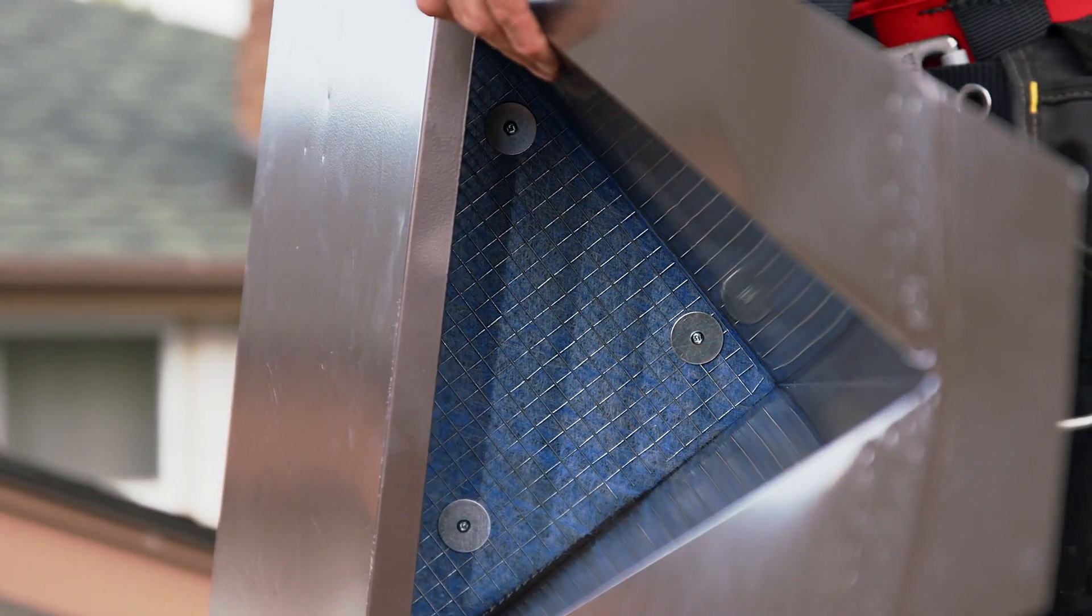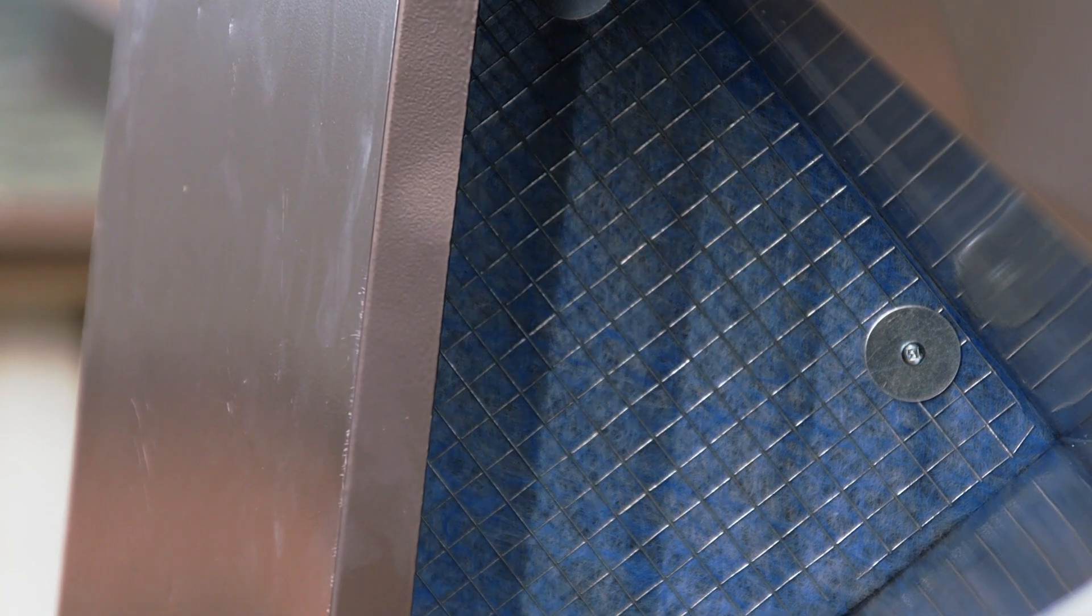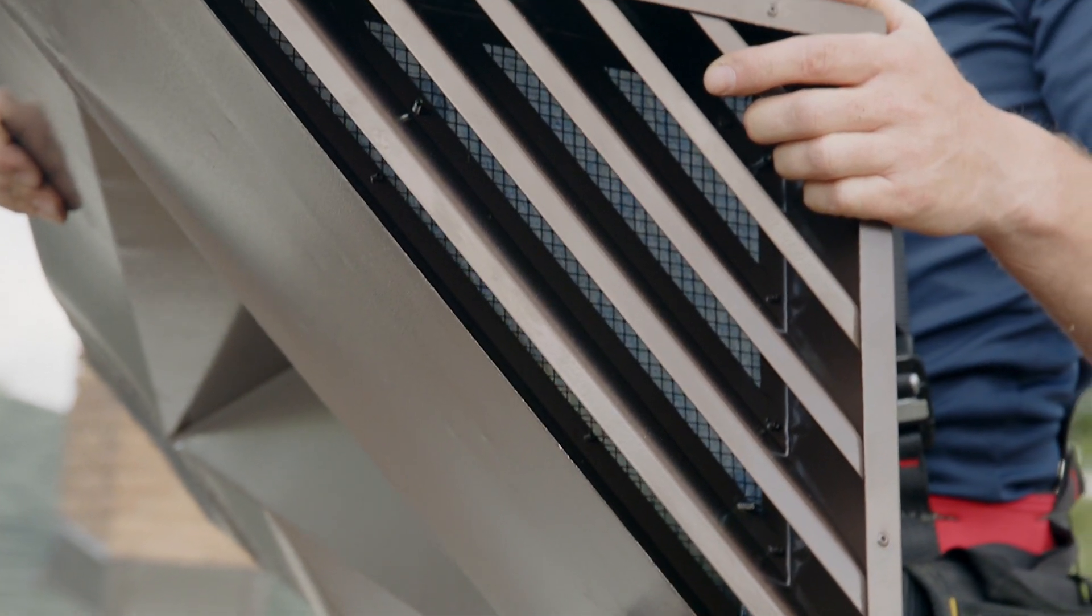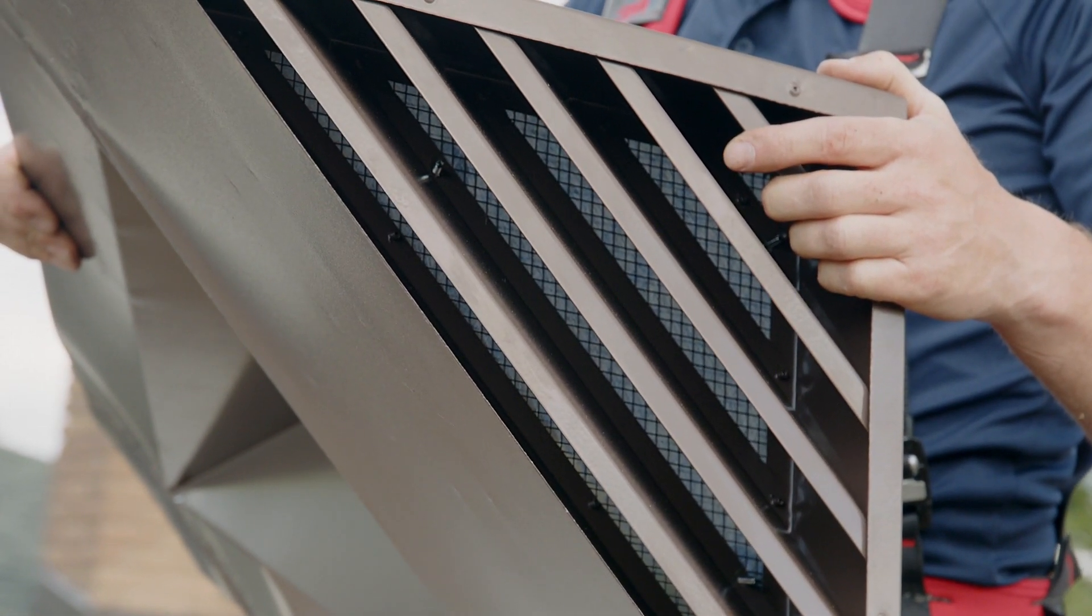Any moisture within the vent collects in the drip tray and is channeled on top of the shingles. The louvers in the front are angled down so any wind-driven rain hits them and is deflected outside of the vent.